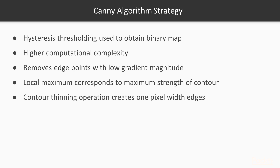In addition, the Canny algorithm uses an extra strategy to improve edge map quality. Prior to hysteresis thresholding, all edge points for which the gradient magnitude is not a local maximum in the gradient direction are removed. The local maximum of the gradient in this direction corresponds to the point of maximum contour strength. This contour thinning operation creates edges having a width of one pixel, which explains why thin edges are obtained in the Canny contour maps.